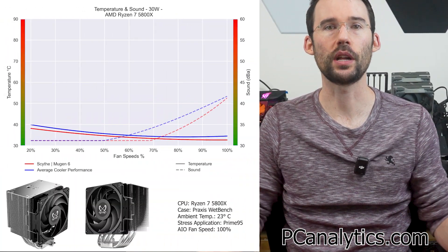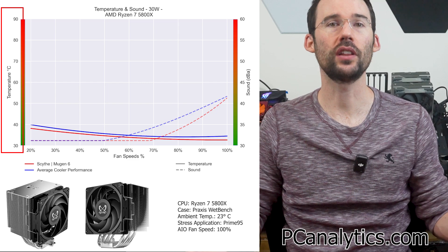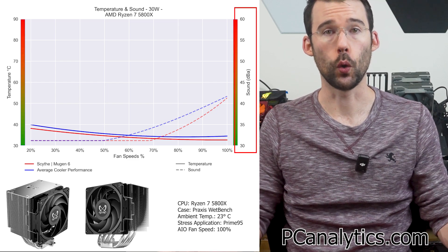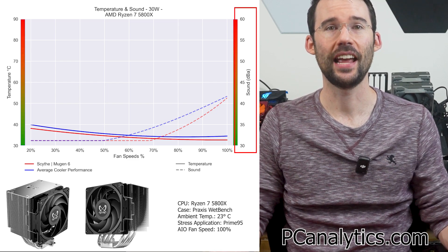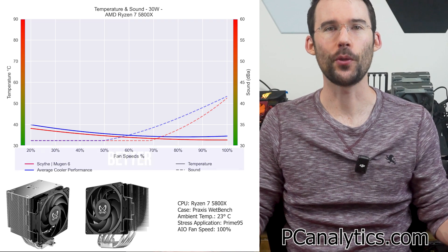In our first set of charts normalized by percent speeds against the average coolers tested, we have temperatures on the left represented by the solid line, noise on the right represented by the dashed line, and percent speeds on the bottom. For this graph, lower is always better.